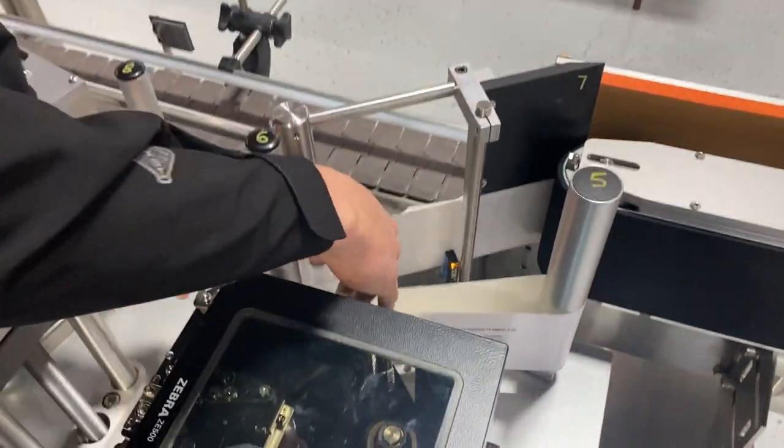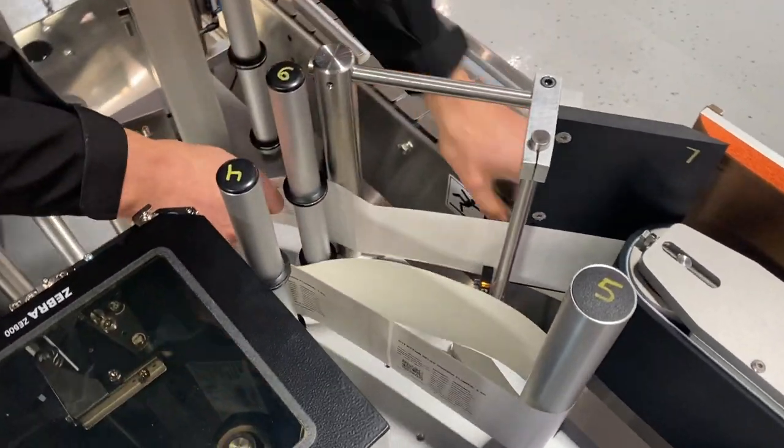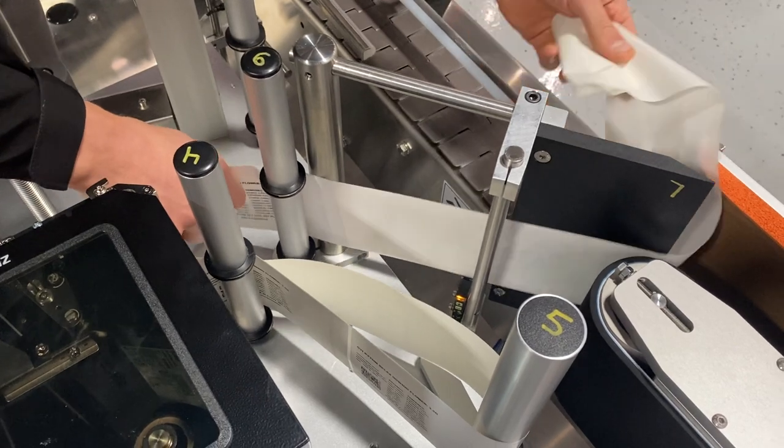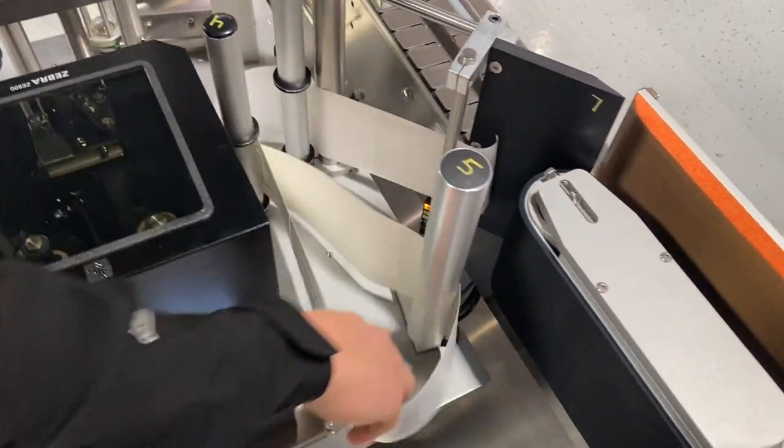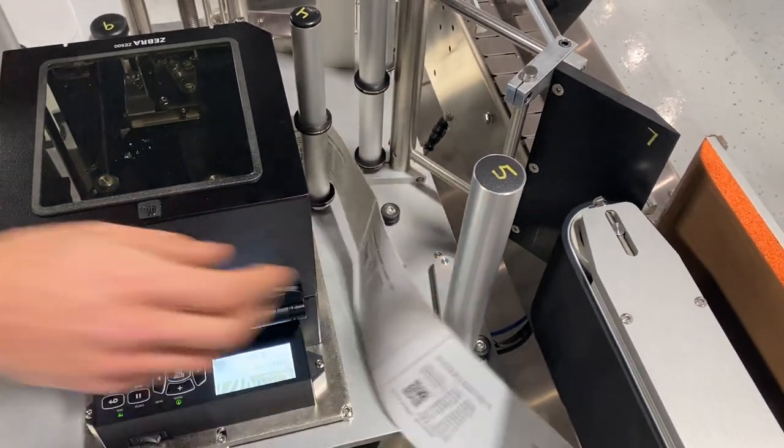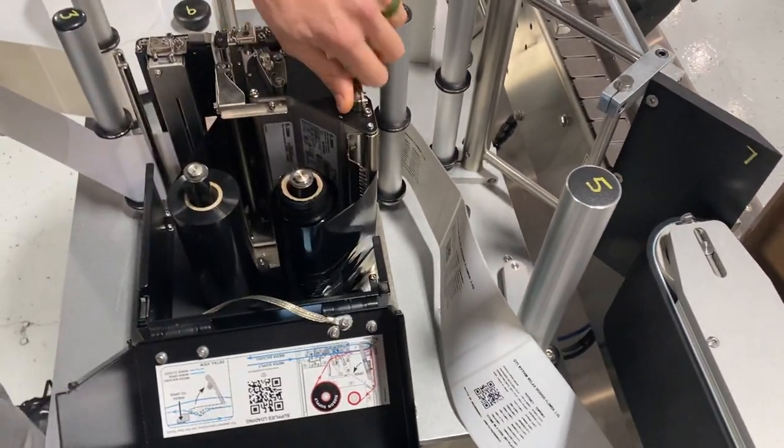I'm going to come around the peel plate. I'll just tear that liner down there. Unweb everything. Open up my Zebra printer.